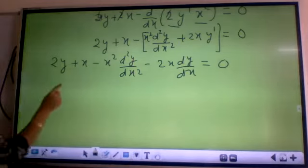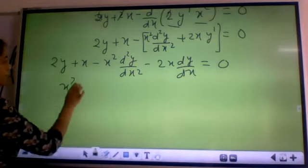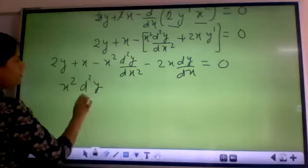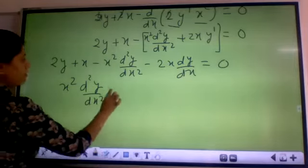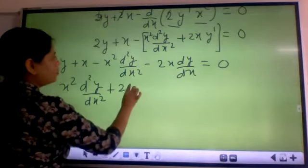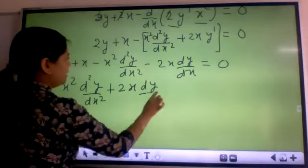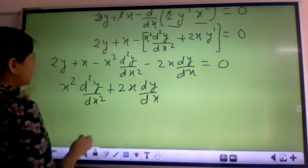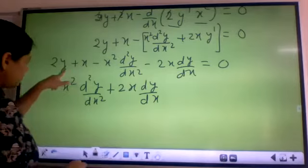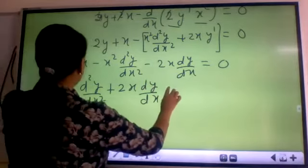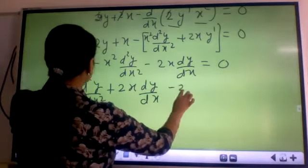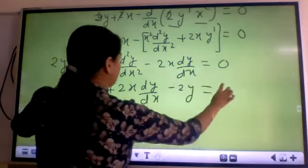Now see if you carefully observe I can rewrite it as x² d²y/dx² plus 2x dy/dx, and then this side I have minus 2y is equal to x.